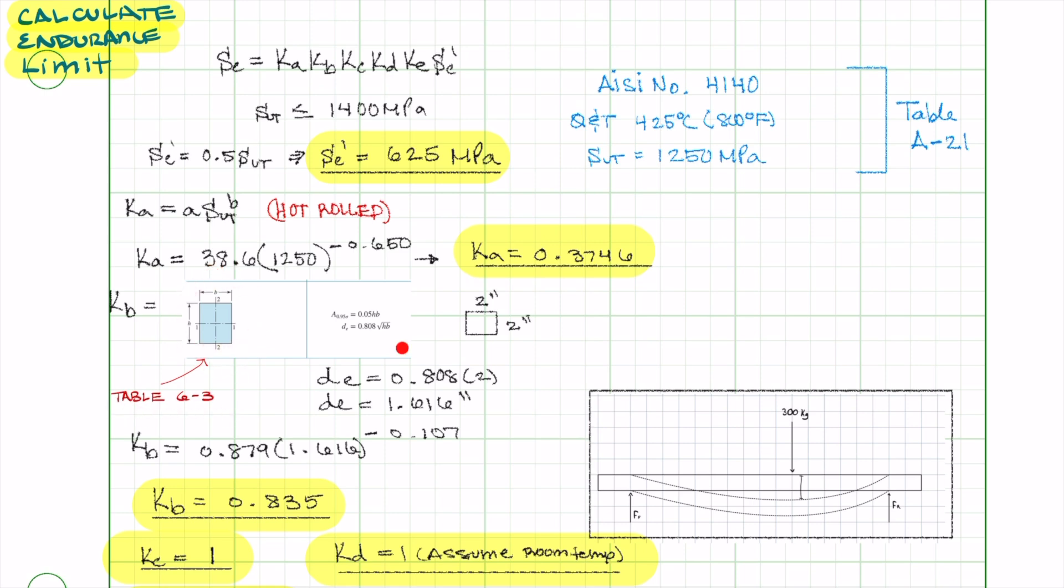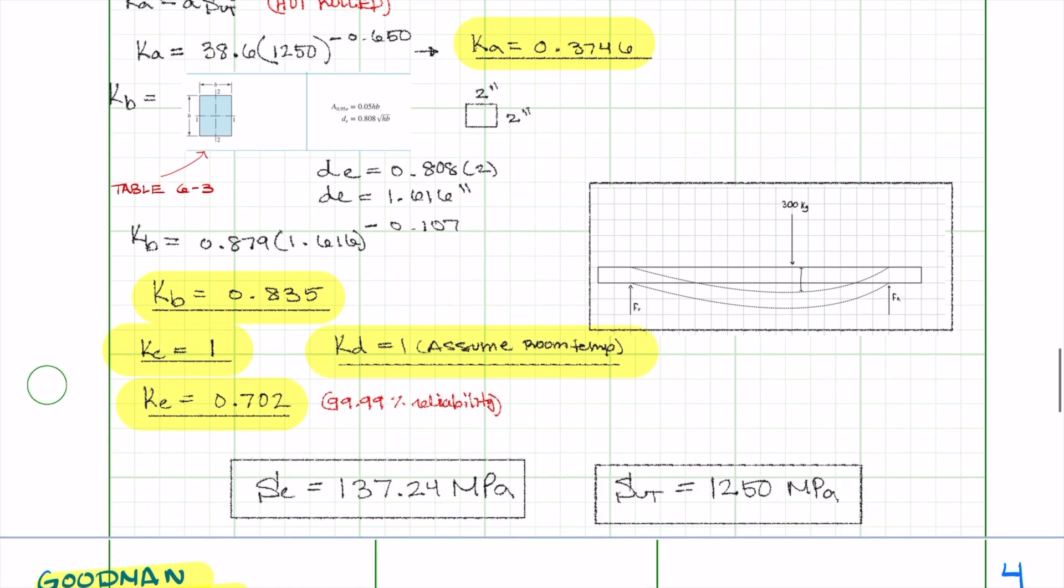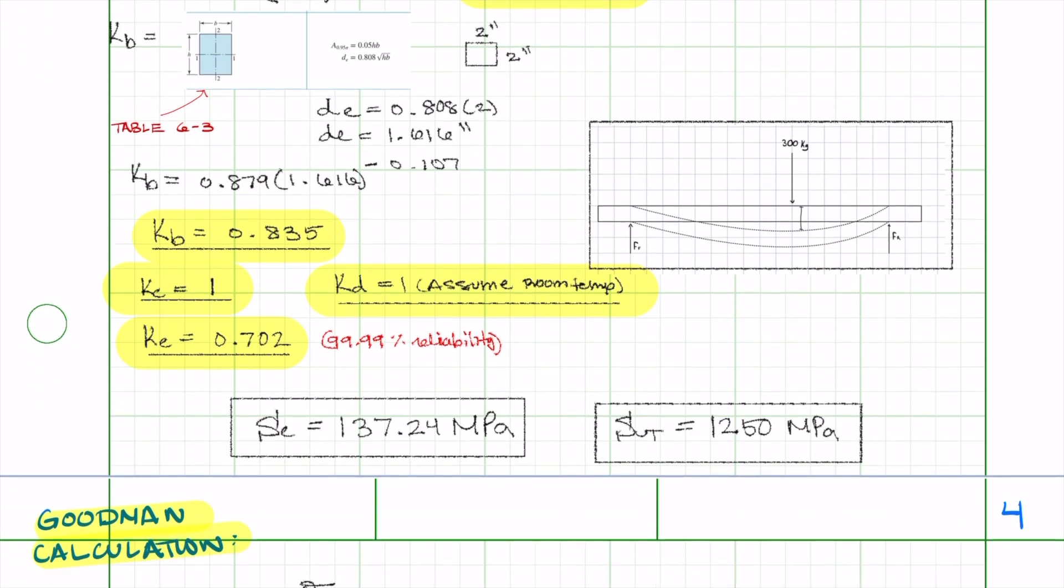Using the equation from table 6-3, the equivalent diameter DE is negative 1.07, and KB is calculated as 0.835. Since the load is bending, KC is 1, and KD is 1, assuming room temperature.